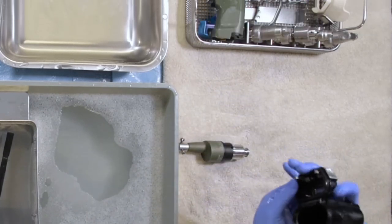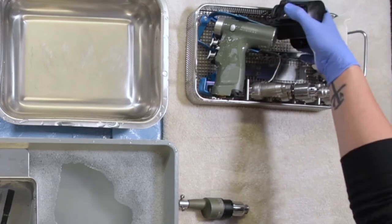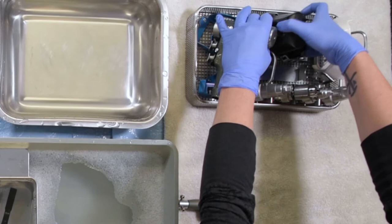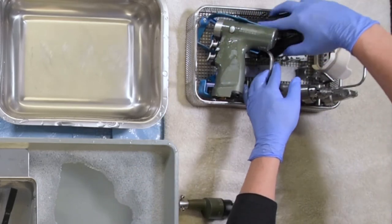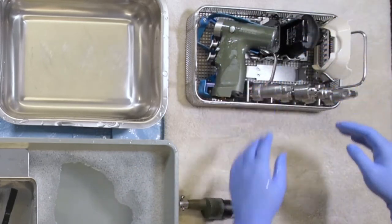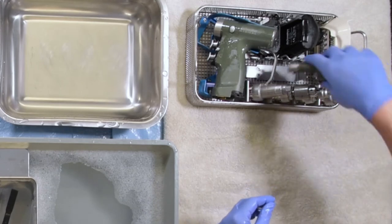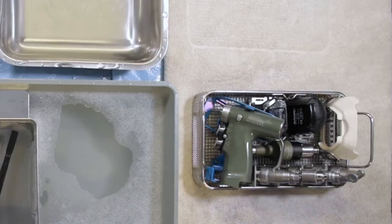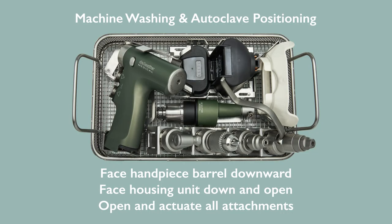When you place your housing into the sterilization basket, make sure that the housing is completely open. Place your TPLO attachment in as well, and your tray should look like this when you're ready to wrap and autoclave. Again, make sure that your housing is completely open and that your shield is included.